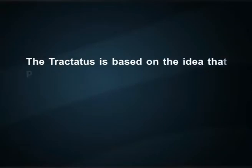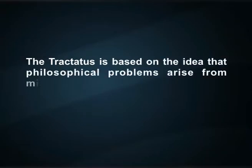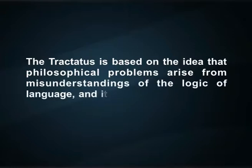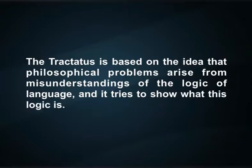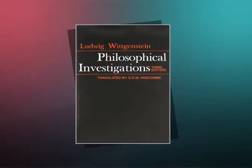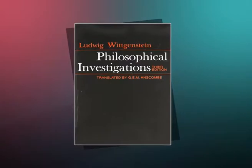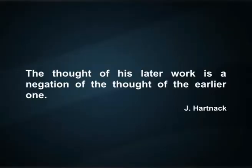The first is represented by Tractatus Logico-Philosophicus and the second by Philosophical Investigations. There is no logical sequence between the two books but there is a logical gap. The Tractatus is based on the idea that philosophical problems arise from misunderstandings of the logic of language, and it tries to show what this logic is. Wittgenstein's later work, Philosophical Investigations, shares this concern with logic and language but takes a different approach. According to Jay Hartnack, the thought of his later work is a negation of the thought of the earlier one.